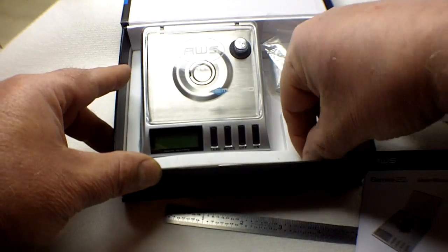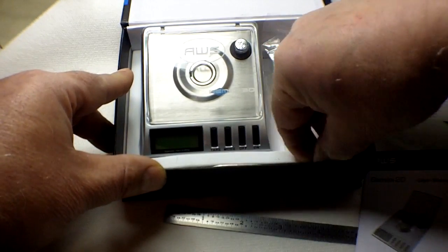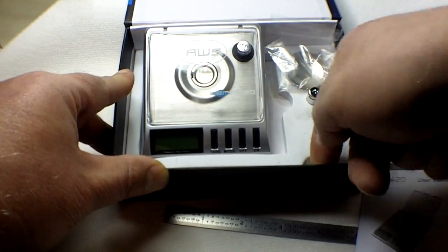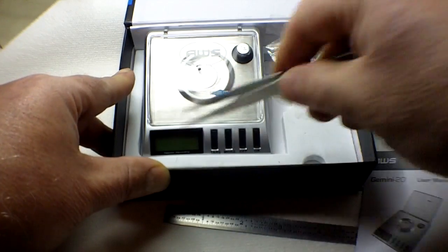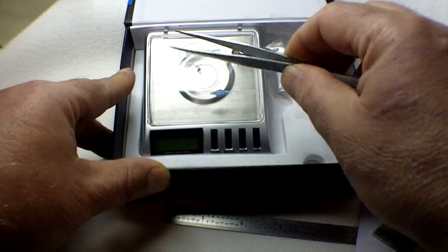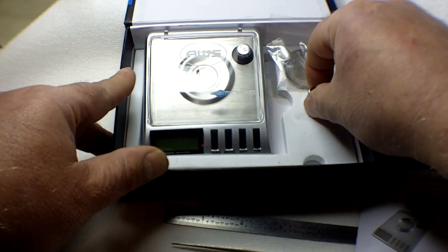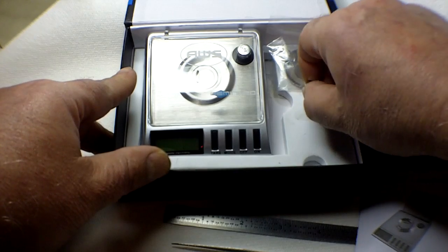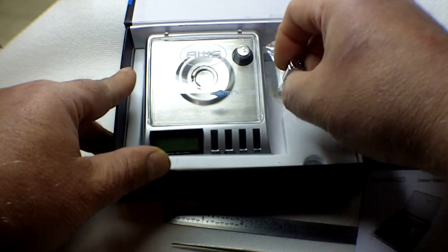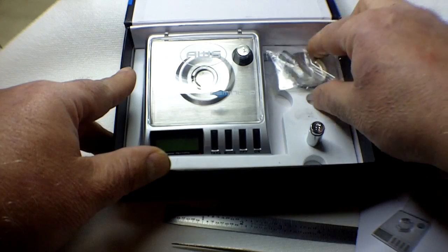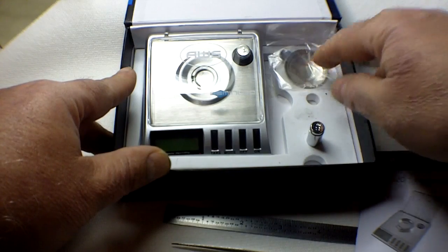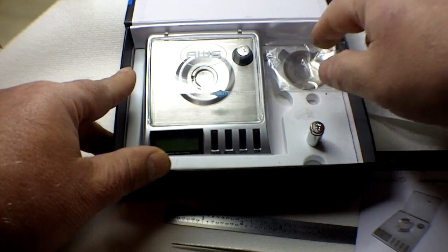It comes with a pair of tweezers - if you can get them out - they're semi-useful. There's a calibration weight in the box and also another one in the case so you can calibrate it, and then a little pan for powders and such.